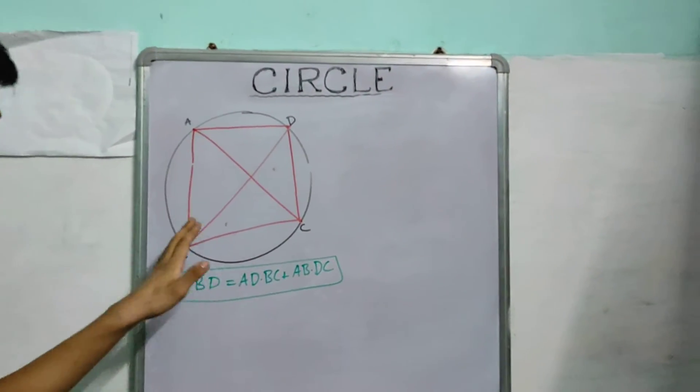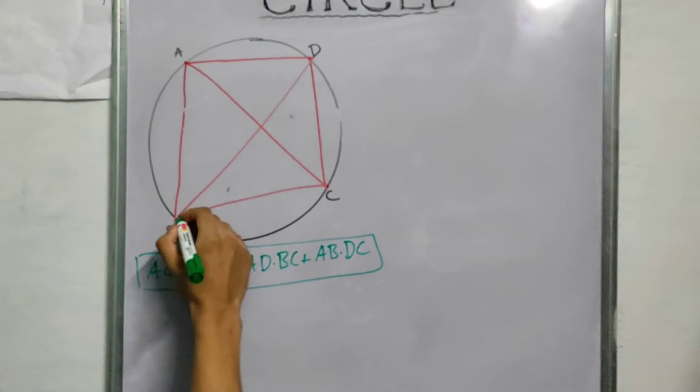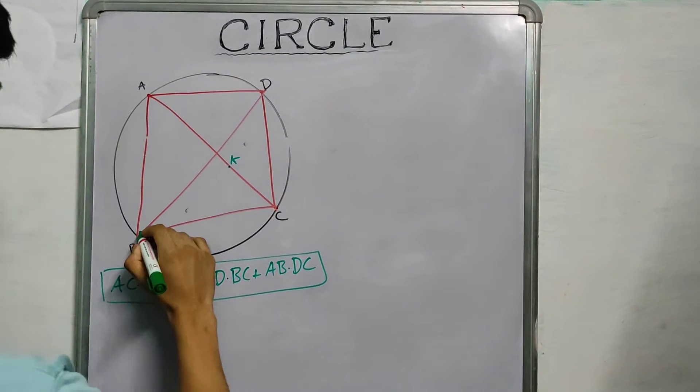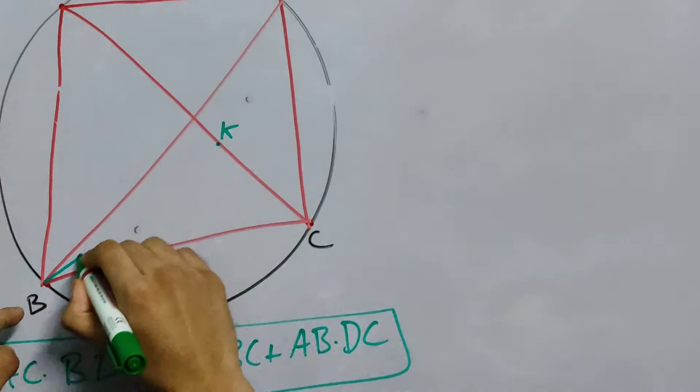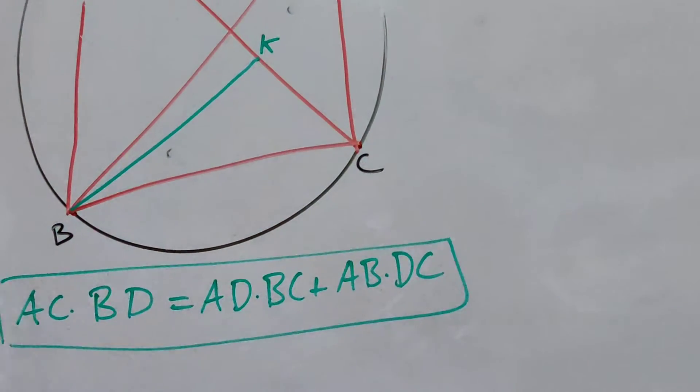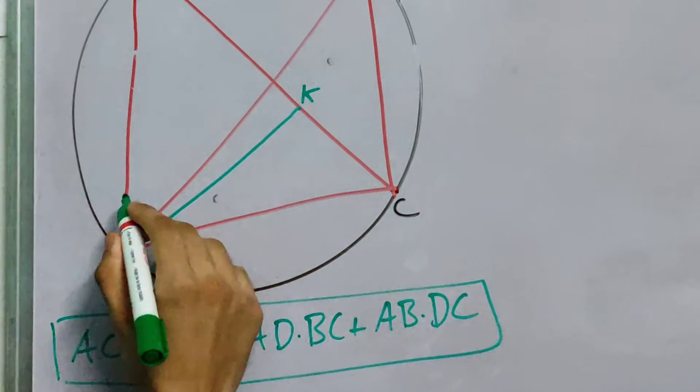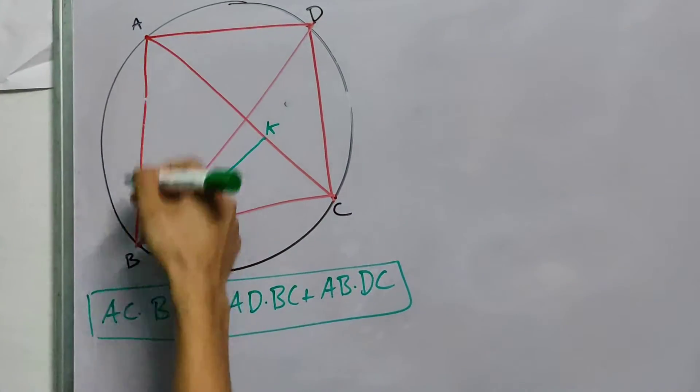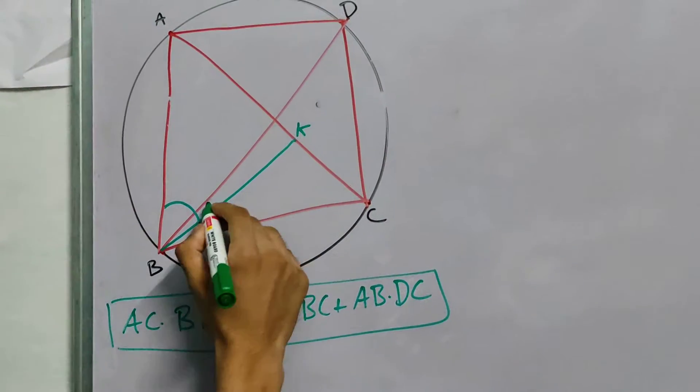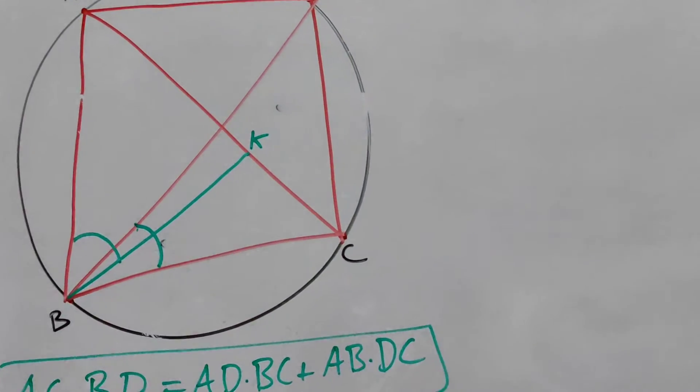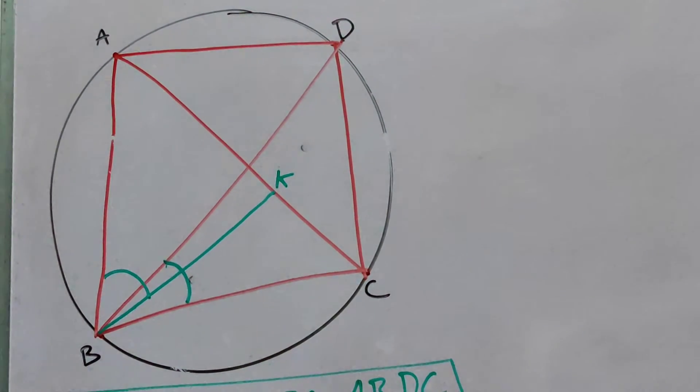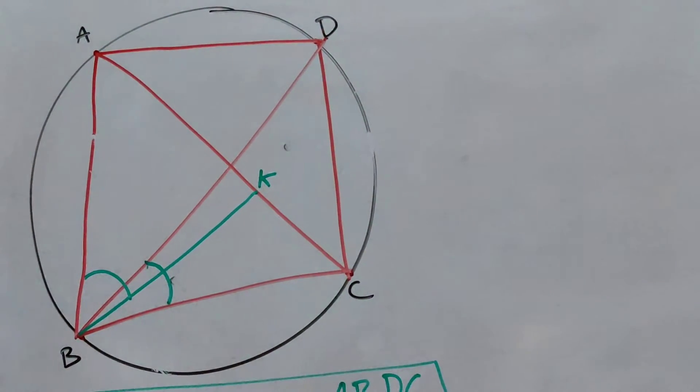Now, this is the clever part of the entire proof. So what we take is, we take a point, let's call this point K. It's a classic proof. Then we join BK. Now this K is very special. It is because we make it such that angle ABK is equal to angle DBC. Now this will be very useful later.